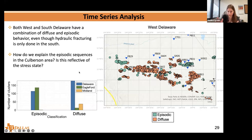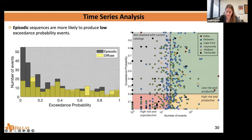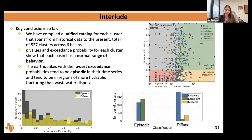I think from a seismological perspective we can dig in and learn something quite interesting here. Linking our time series analysis and exceedance probability analysis, one of the things we find is that episodic sequences are more likely to produce low exceedance probability events. In other words, events below an exceedance probability of 0.2 tend to be episodic rather than diffuse. So we have this unified catalog for all of Texas showing a range of behavior across basins, interesting observations of episodic versus diffuse in different basins, and how that relates to the exceedance probability.